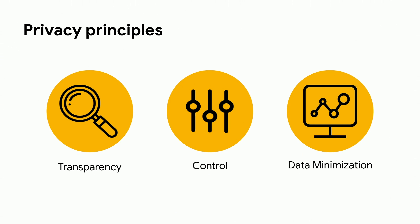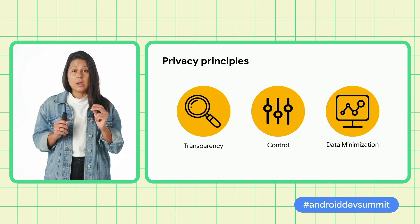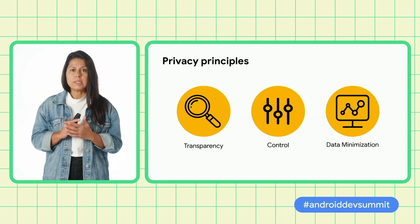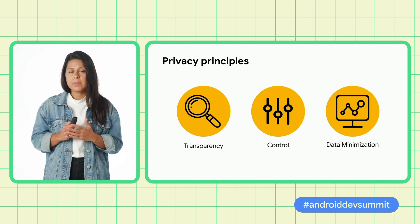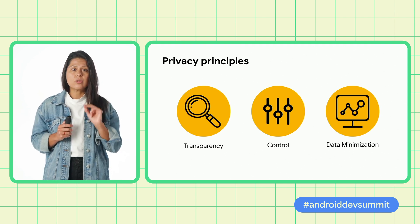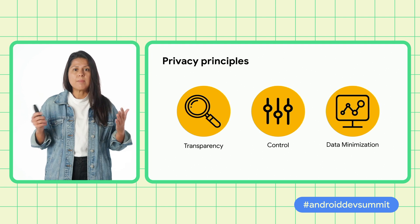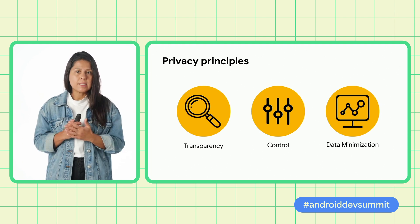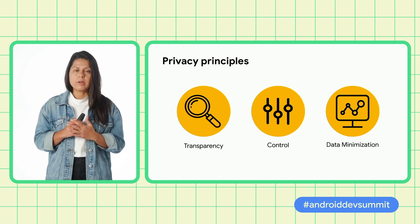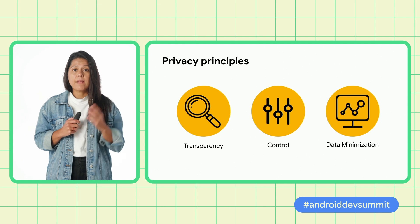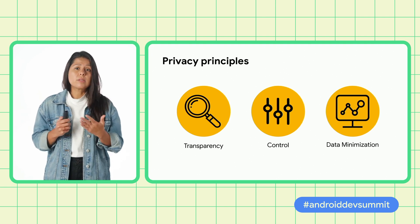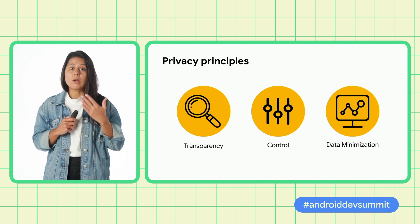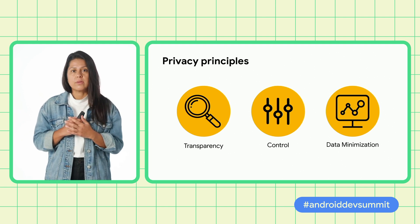We've done this by relentlessly focusing on three core principles. First, by adding transparency around what data is accessed by apps and when. Second, providing simple controls for users so they can make informed choices about enhancing or limiting apps' access to their data. And third, focusing on data minimization to reduce the scope of permissions so users are not surprised by the data that leaves their device.